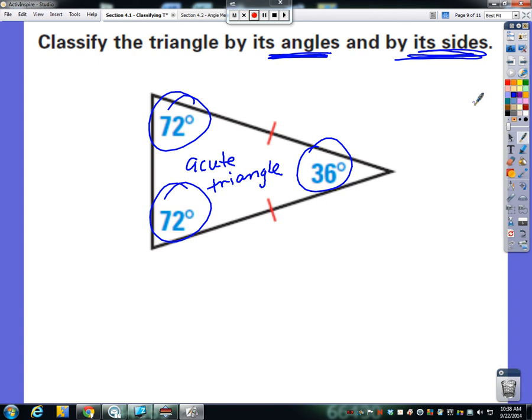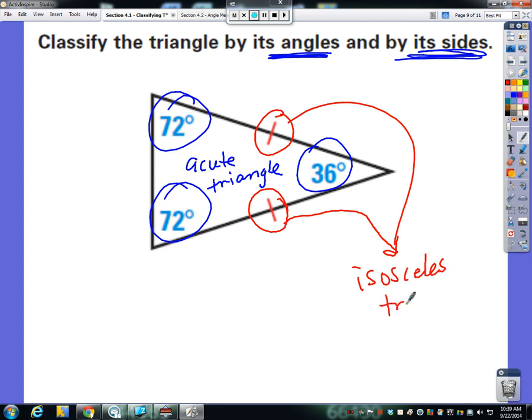Now, based on its sides, this is where it's going to be scalene, isosceles, or equilateral. If we look at the side measures, we don't have any specific numbers, but we see that these two sides are the same, and the last side is not. So based on these side measurements, where two of them are the same, this would be considered an isosceles triangle.